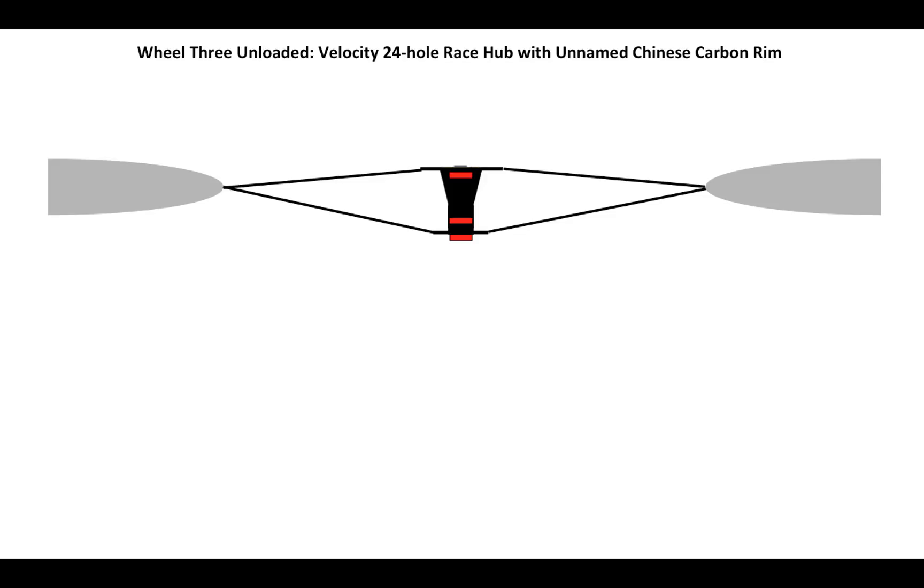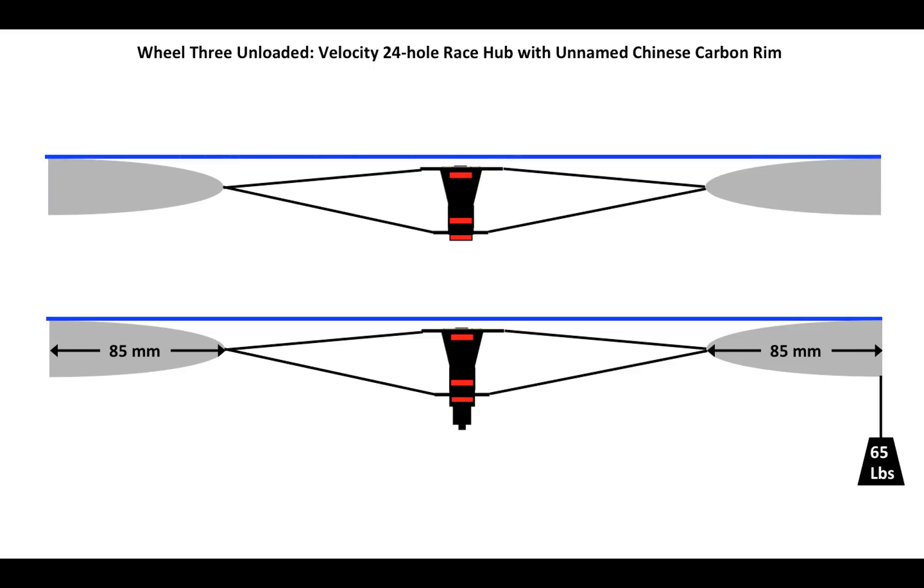Here's a graphic of wheel three unloaded with the 85 millimeter unnamed Chinese carbon rim. Let's put a line here just as a reference and that line is sitting right on top of the rim at its outer extremities. Here we see a weight just at the point that it's applied. We know from our experience that the rim is going to go down at this 270 degree point and go up here at 90 but we don't know what will happen in the inner areas.